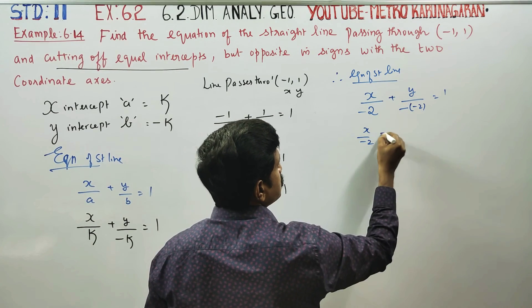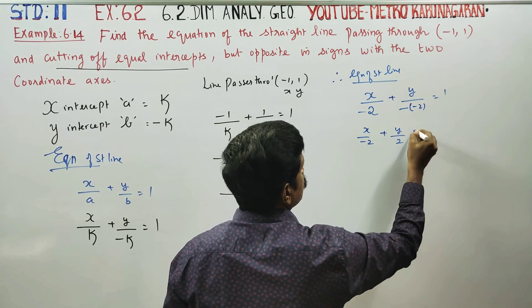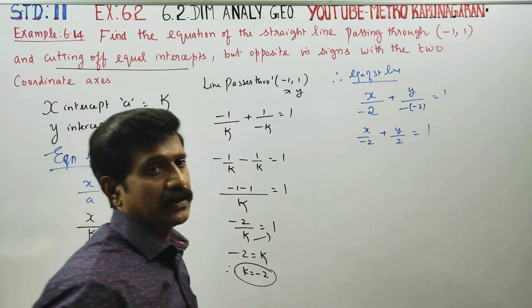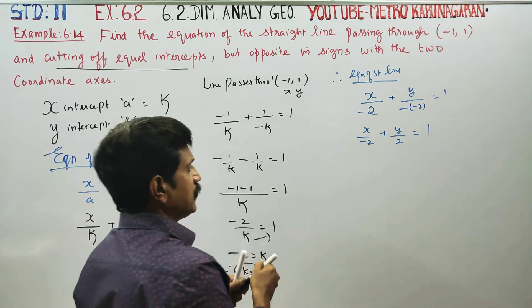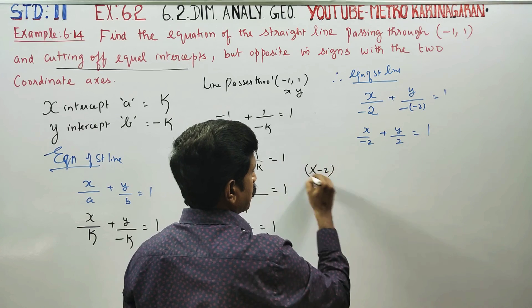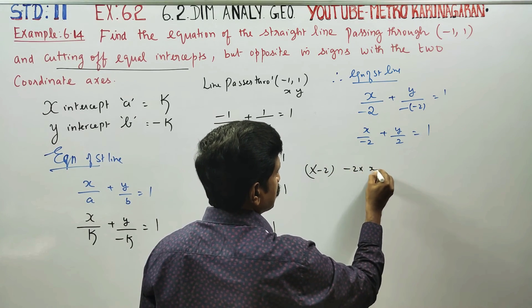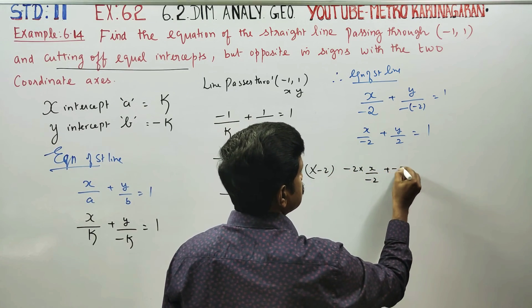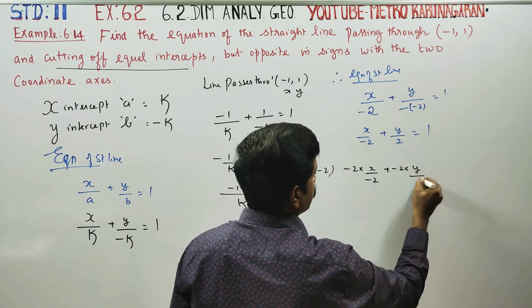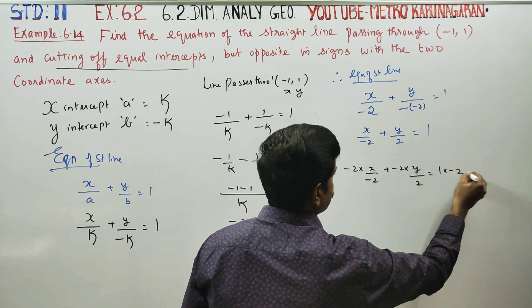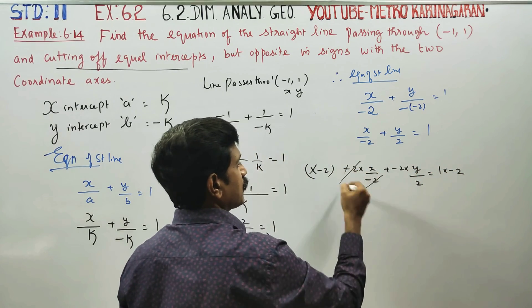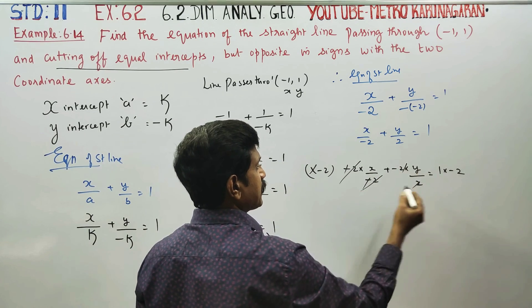Therefore, x by minus 2 plus y by minus 2 is equal to 1. x by minus 2 plus y by minus 2 is equal to 1. Cancel minus 2, cancel minus 2.